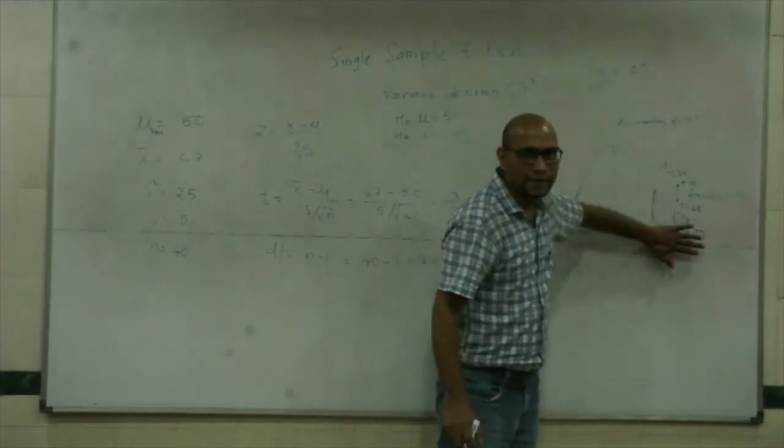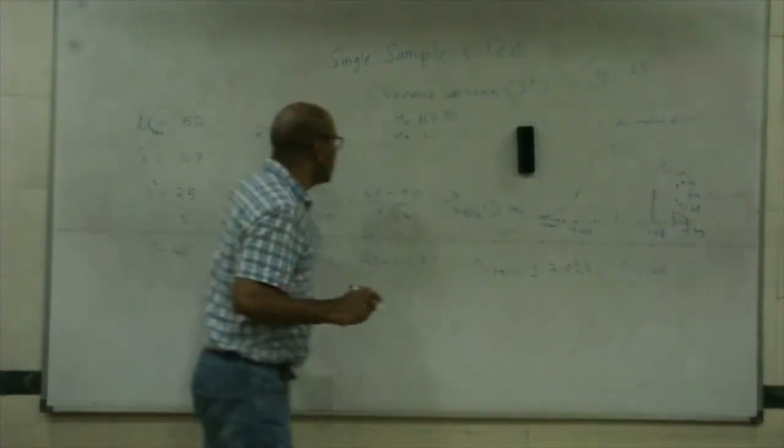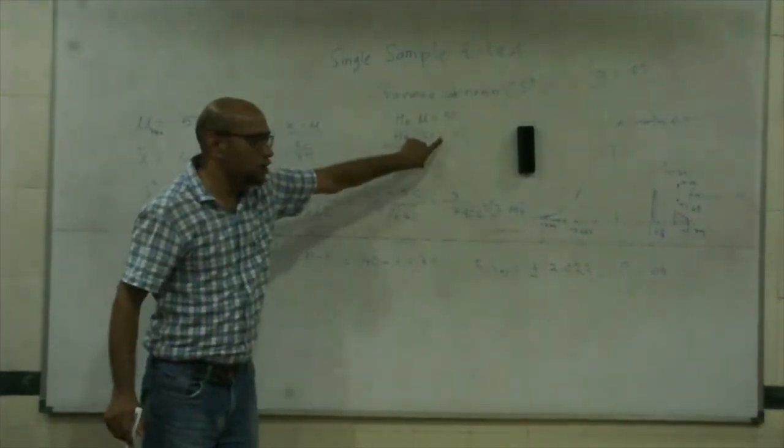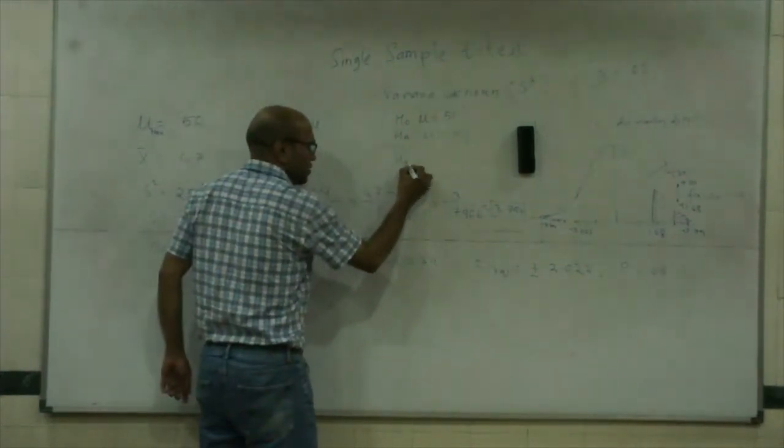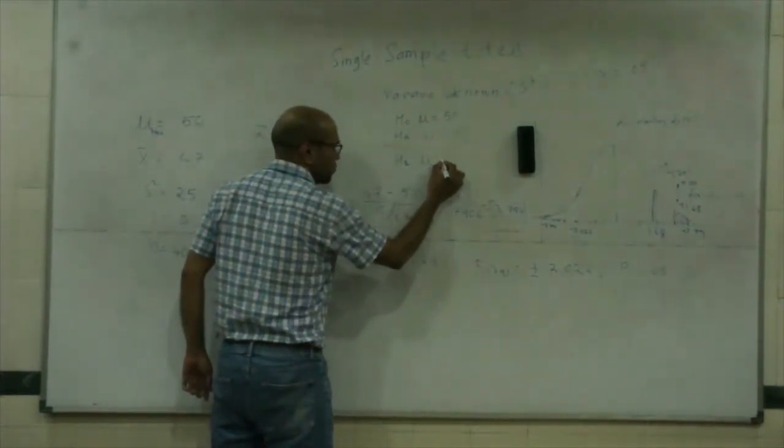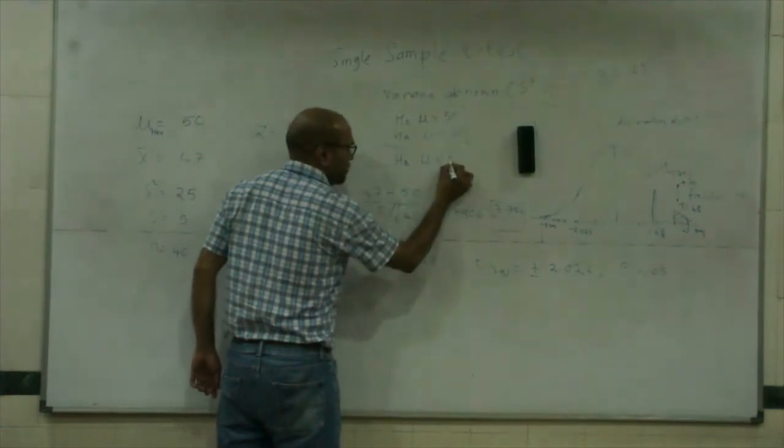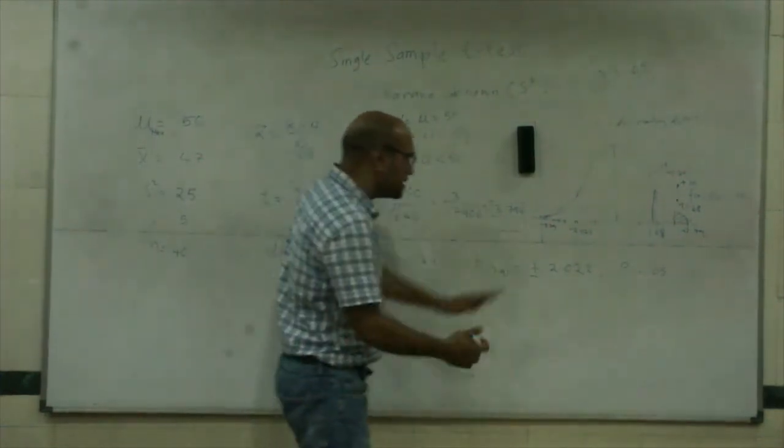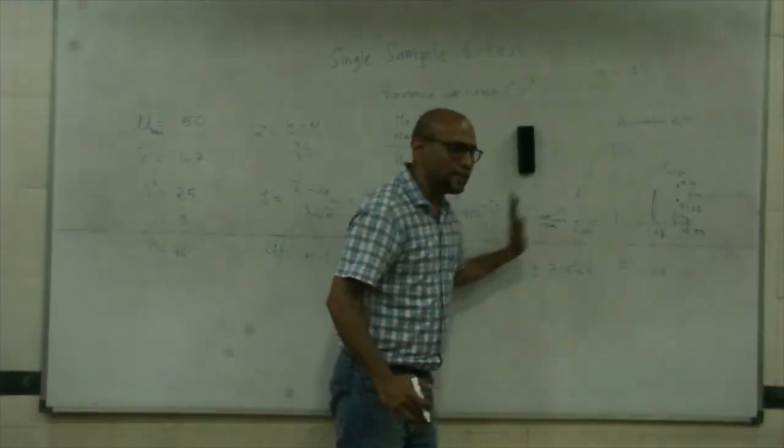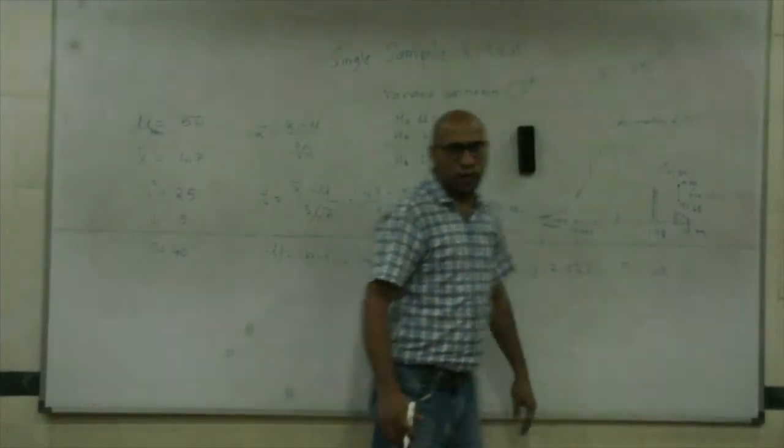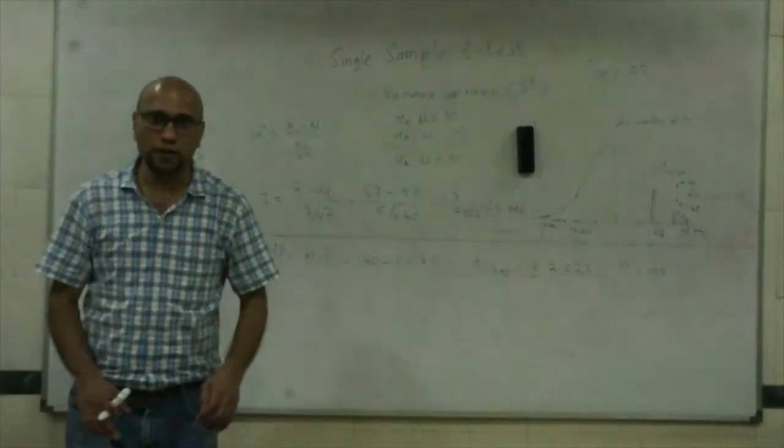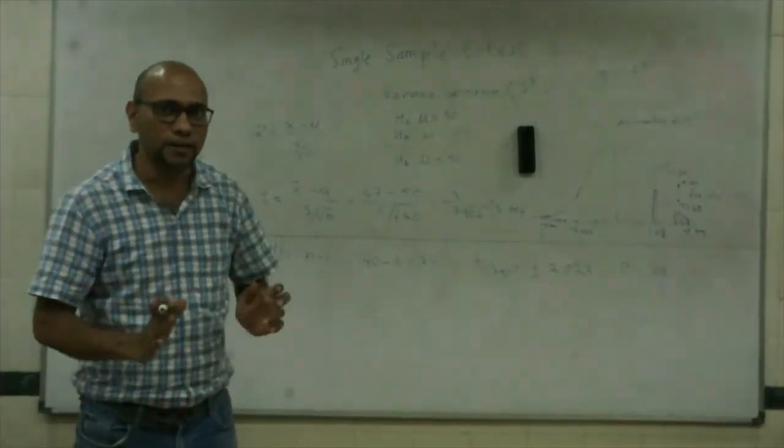This is a one-tailed test. I would use a one-tailed test if I have an alternative direction. The other directional alternative I could have had is μ less than 50. In that case, I would have looked at the area on this side and would have ignored the other side.